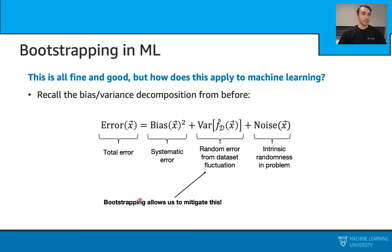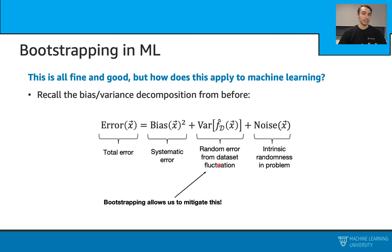We will specifically see the effect of bootstrapping on the bias-variance decomposition. With this decomposition, we can write our total error in terms of bias squared plus variance plus a noise term. With the application of bootstrapping, we can reduce this variance term.